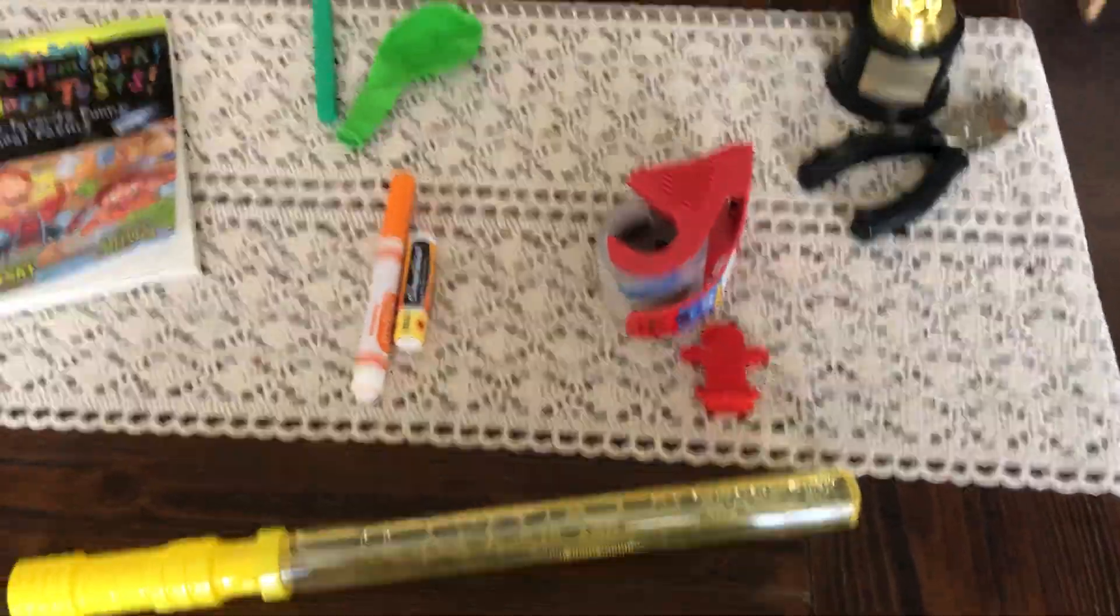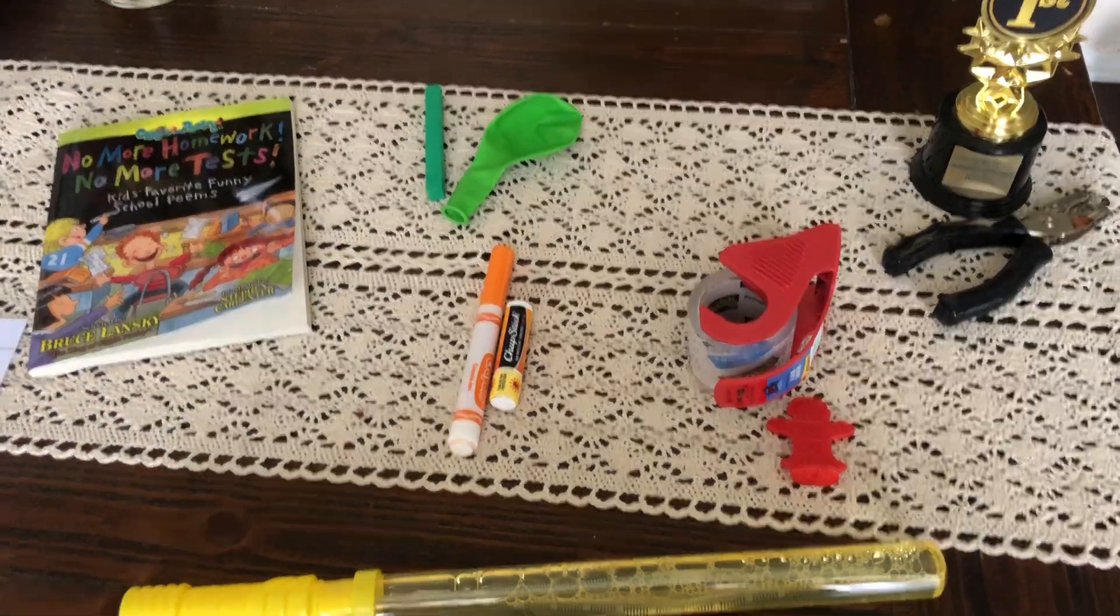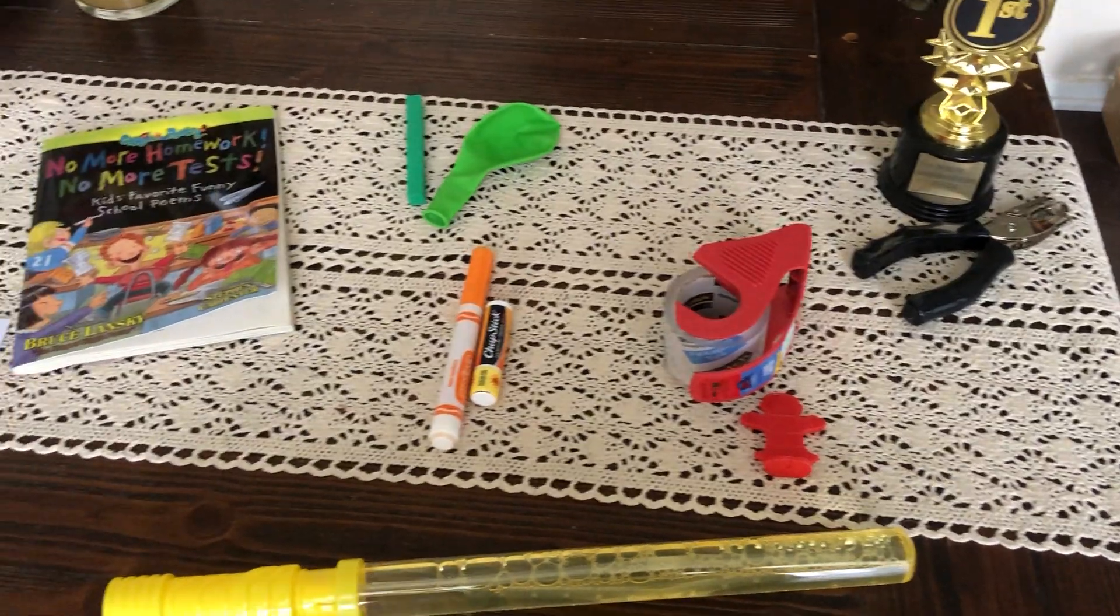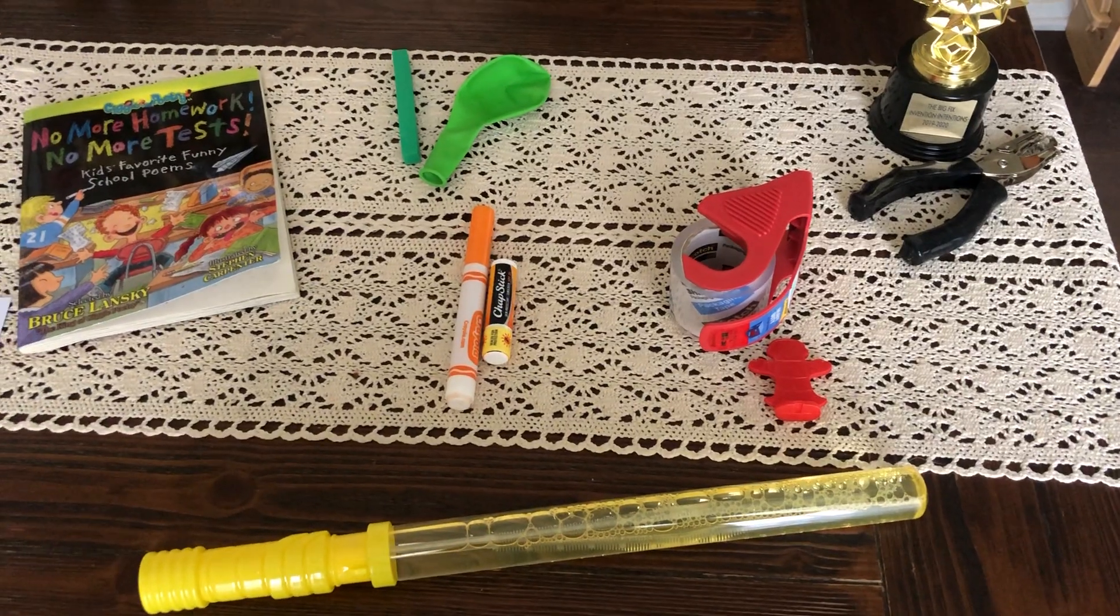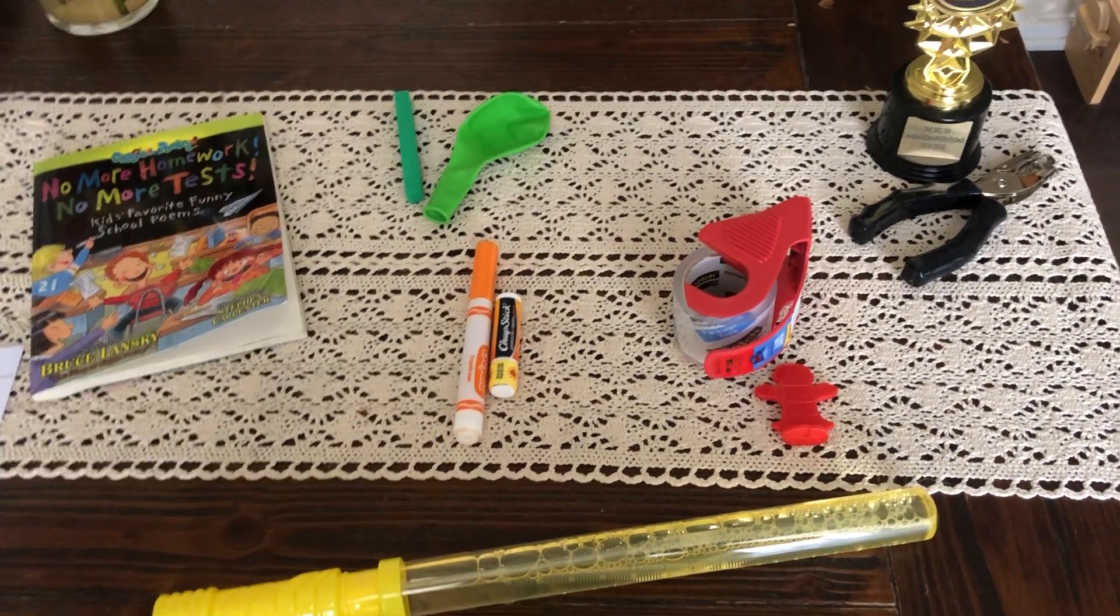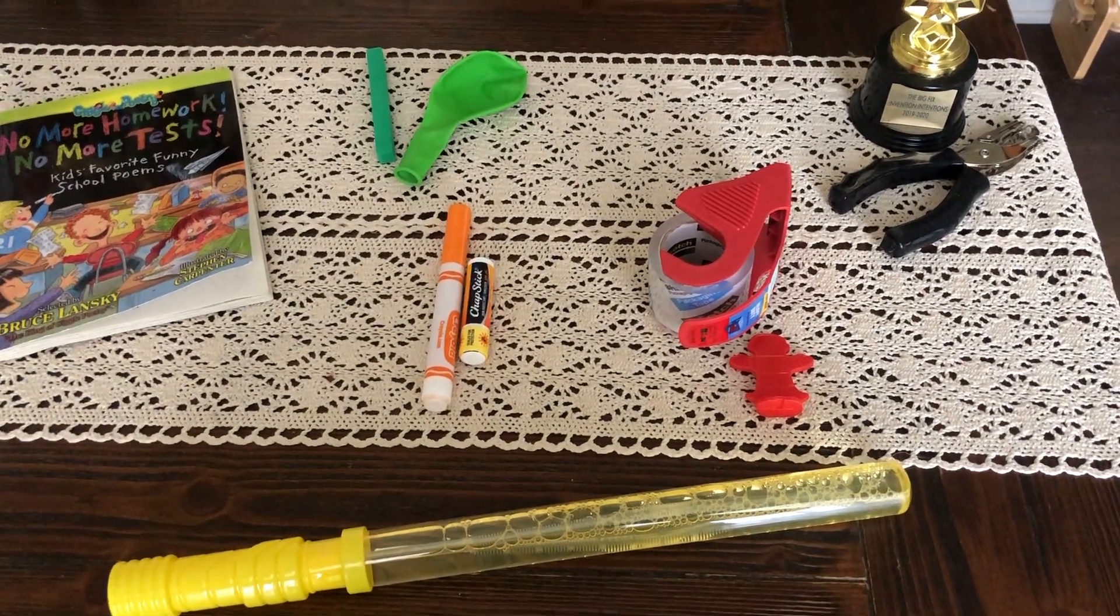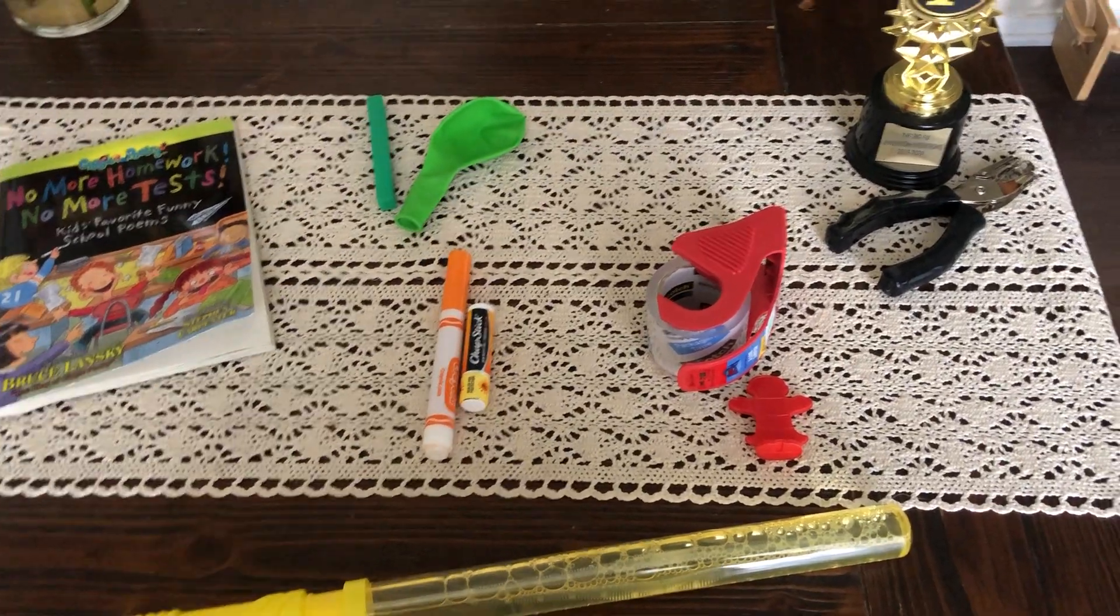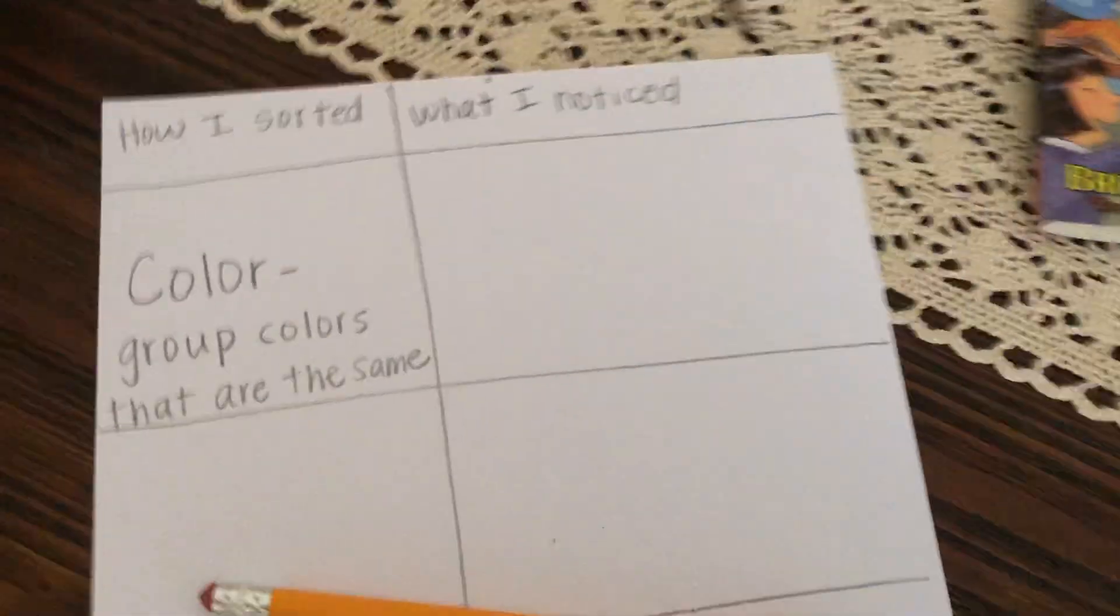Now that I have all of my items sorted into their color groups, I'm going to think, what do I notice about these groups? I notice that my groups are pretty small. I only have one or two objects in each group. That's kind of surprising to me because I like color. So it's kind of strange that I don't have more objects of the same color. I'm going to write that down.